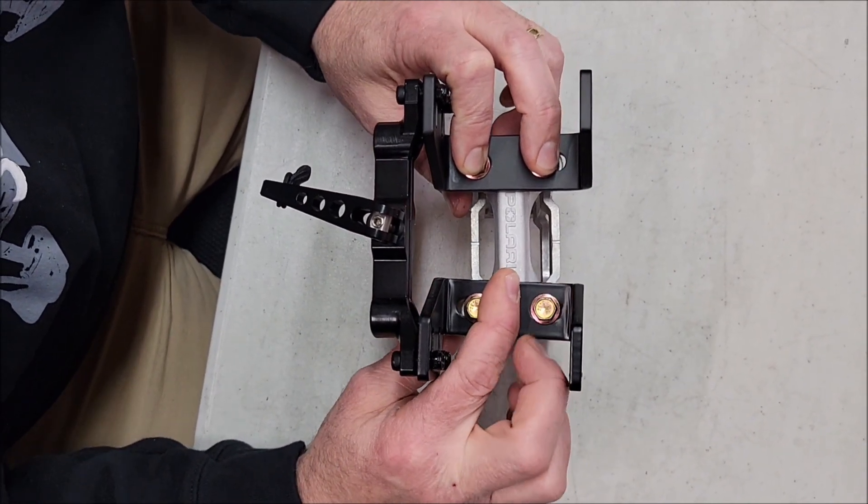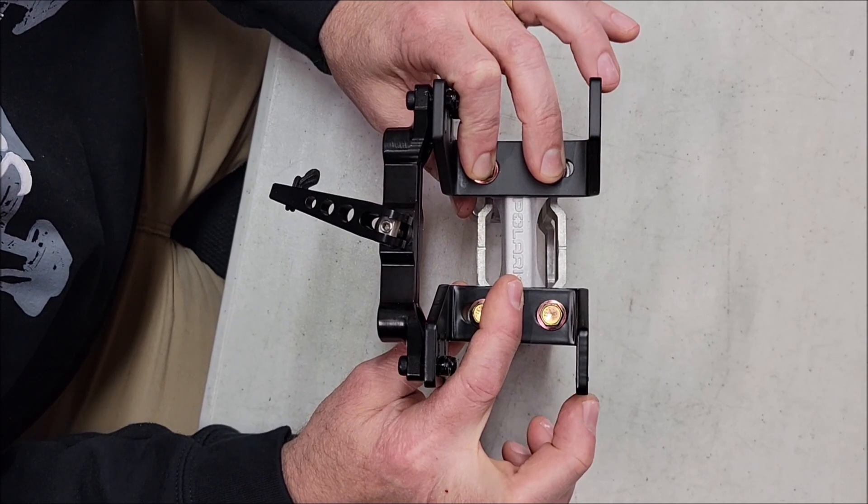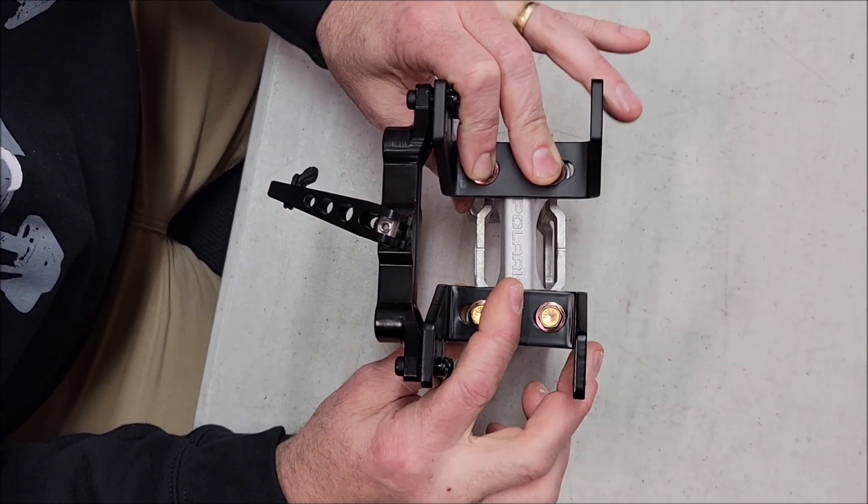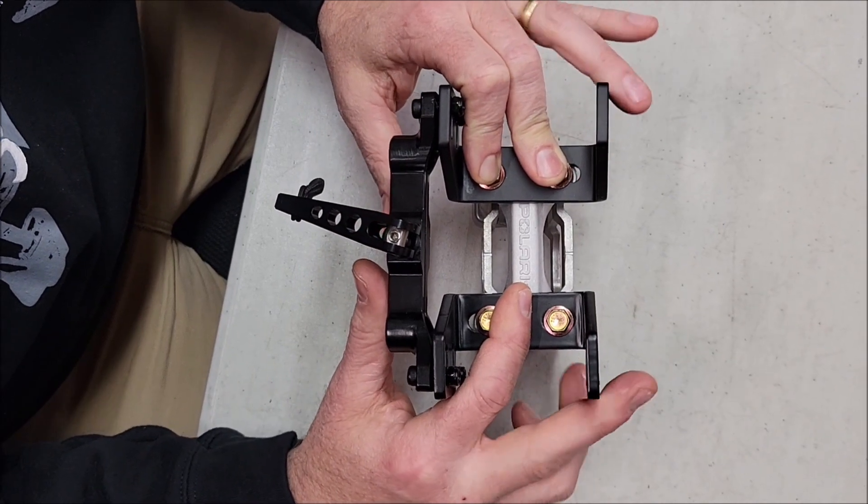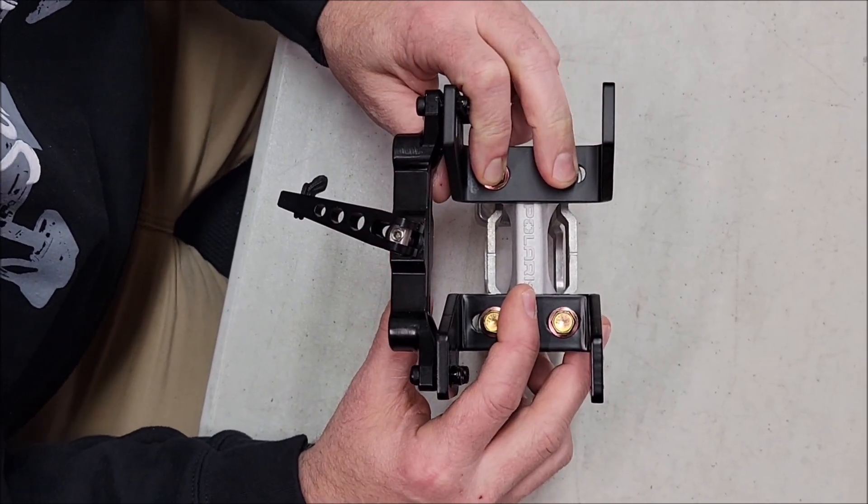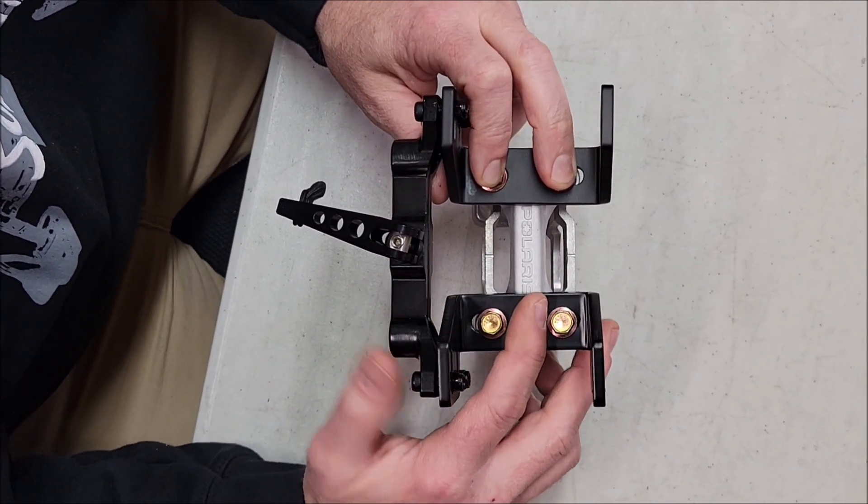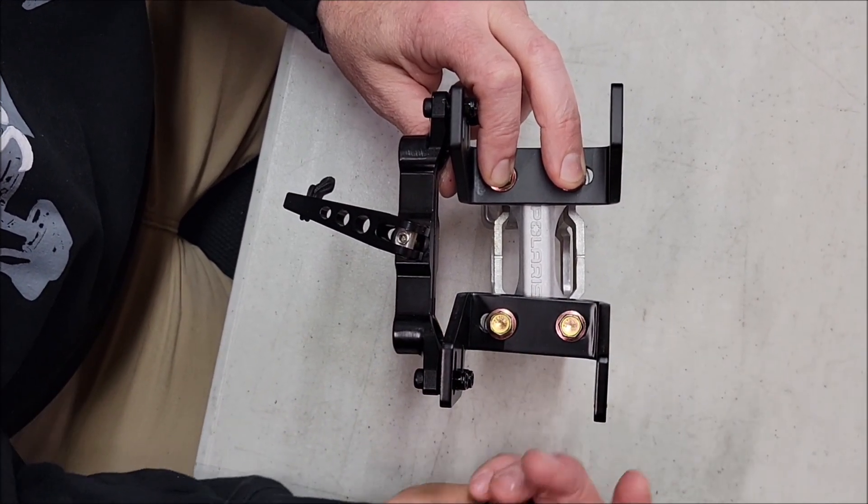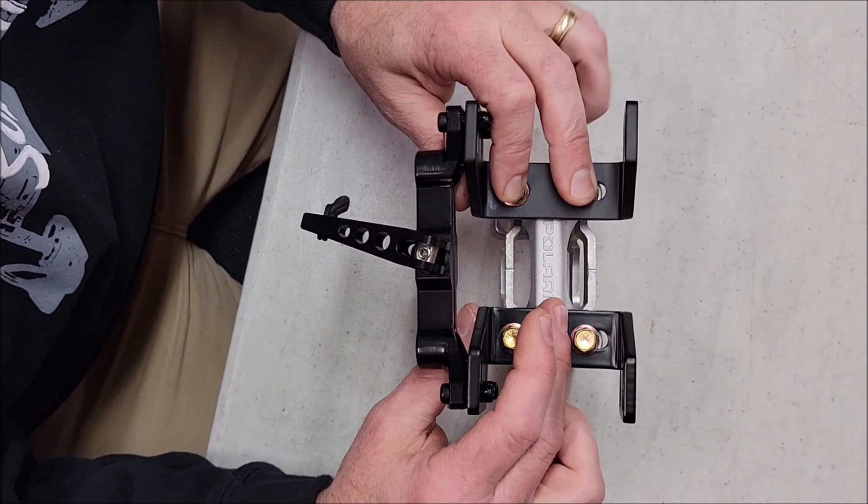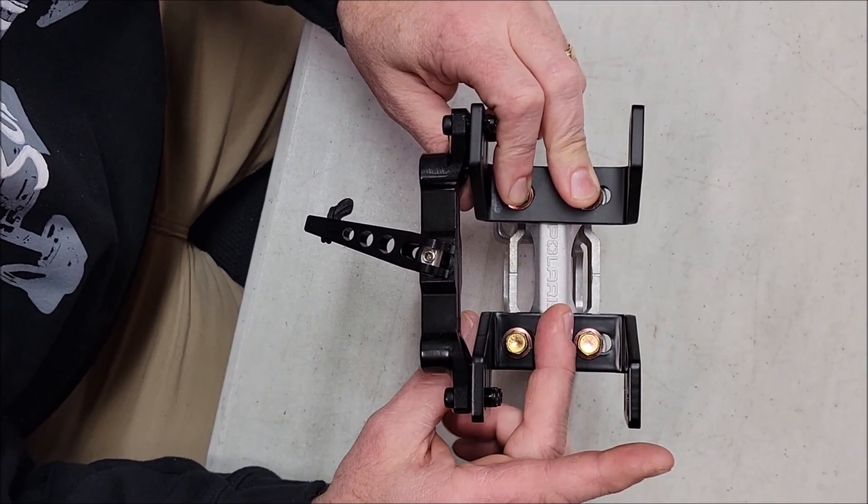We've also talked about in the past, in some of our other videos, these two bracket uprights here. If you're only running the main bag and you don't want this, you can cut them off. Obviously not for everybody, but some people are capable of doing it. Cut it off, use a paint marker to touch up the black, and then you don't have these brackets sticking up.